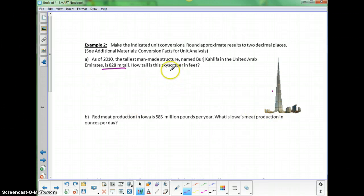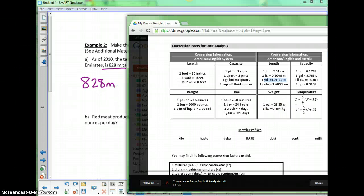We want to find out how tall that skyscraper is in feet. So we're looking at converting 828 meters into feet. Let's look for that conversion fact. Meters into feet - we're going to be using this conversion fact right here. 0.3048 meters is a foot.